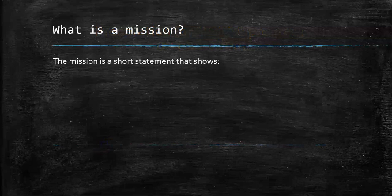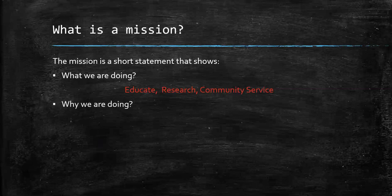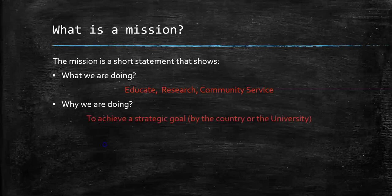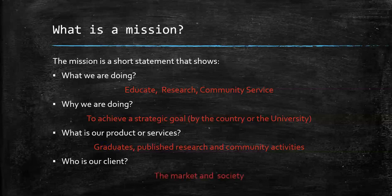What is a mission? The mission is a short statement that shows what we are doing — for example, we educate, we do research, and we provide services for the community. What we are doing to achieve strategic goals by the country or the university. What is our product or services? Graduates, published research, and community activities. Who is our client? The market and society.